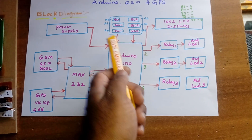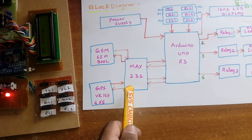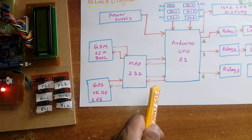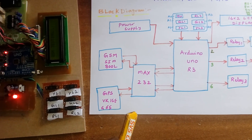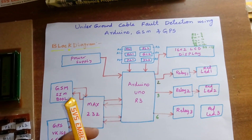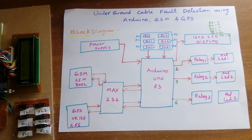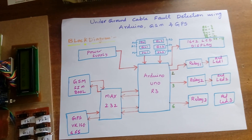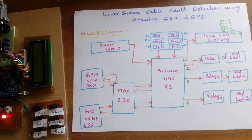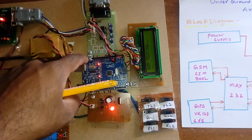I am using one GSM SIM800L and the GPS module is VK1665 channel GPS. The student is asking for SMS alert. We can also extend this project through IoT — there should be a web page that shows the exact location latitude and longitude on a Google Map.